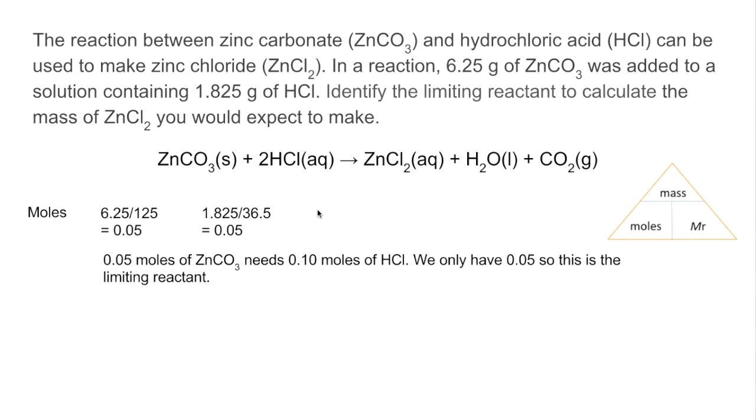So now we know which is the limiting reactant we can work out how many moles of product is possible so 0.05 moles of HCl would give half as many moles of ZnCl2 from the ratio and so we're going to get 0.025 moles of ZnCl2 now we know the moles of product possible we can convert that to grams by multiplying the moles by the MR so 3.4 grams is the answer to that one.